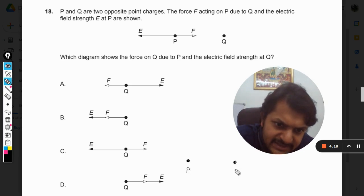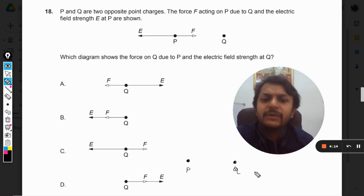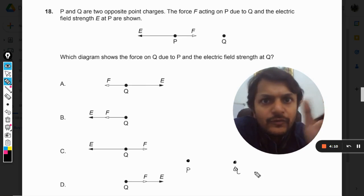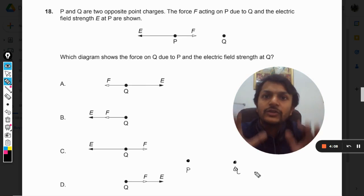This is P and this is Q. And both of them are having opposite charges. So we do not know which charge is positive and we do not know which charge is negative, but we know that they are of opposite sign.